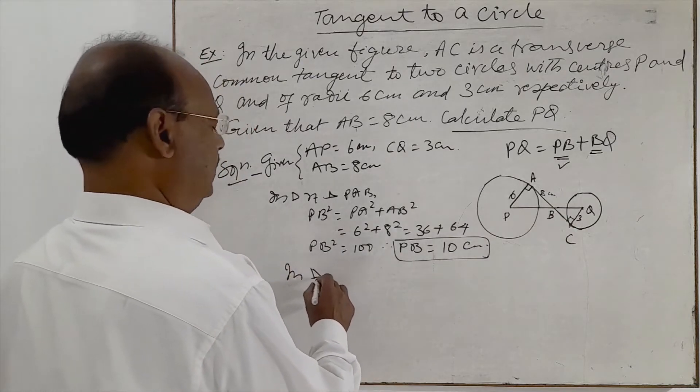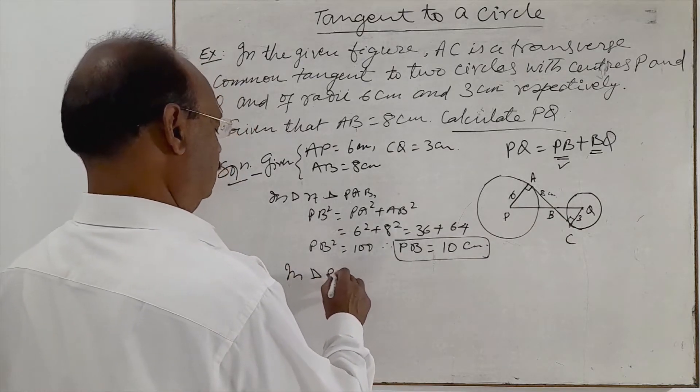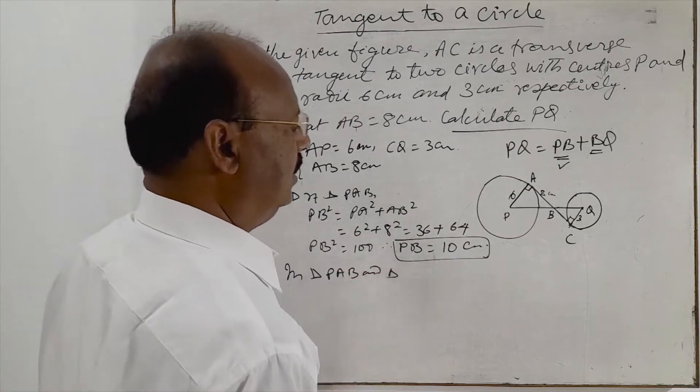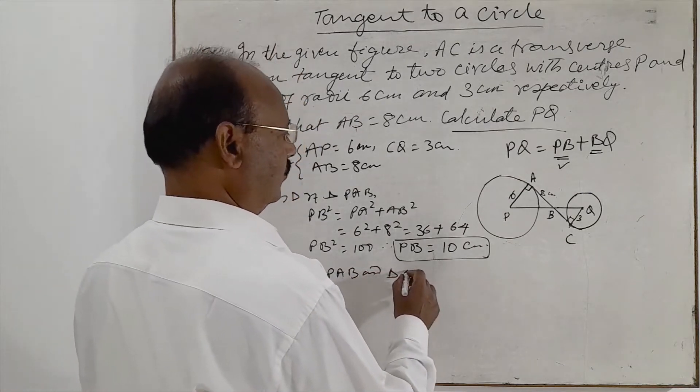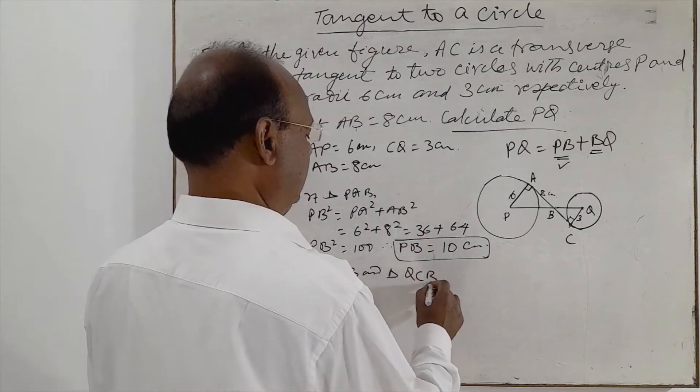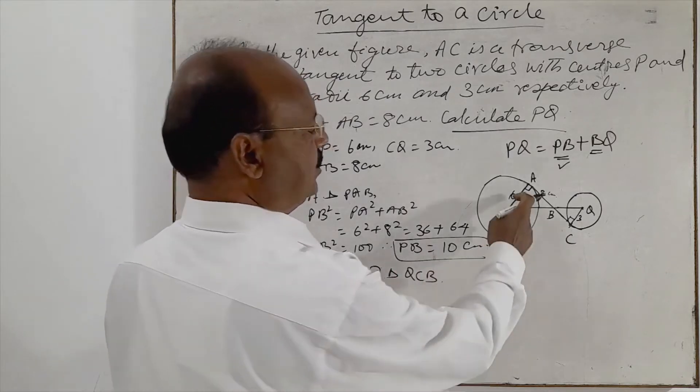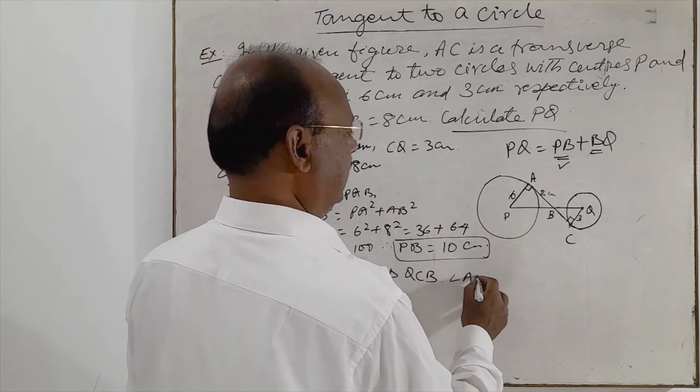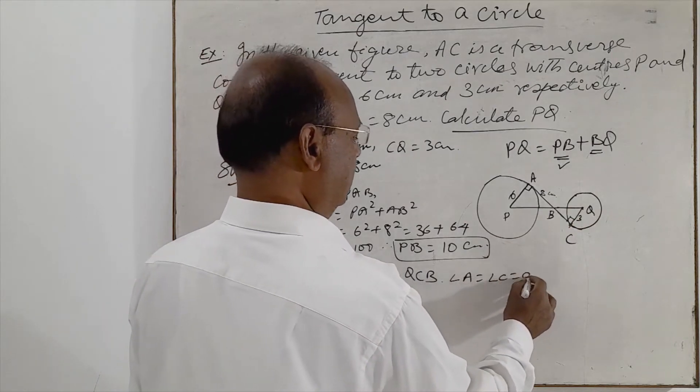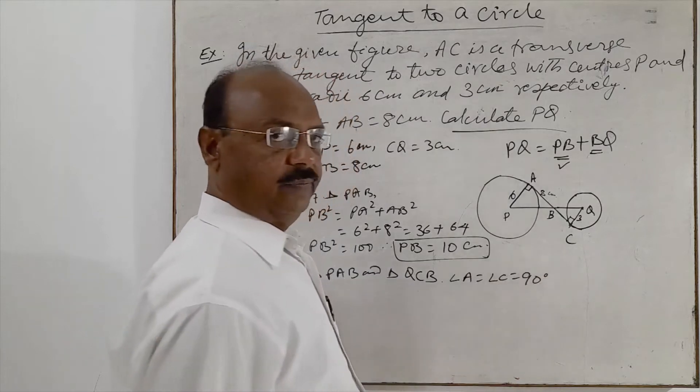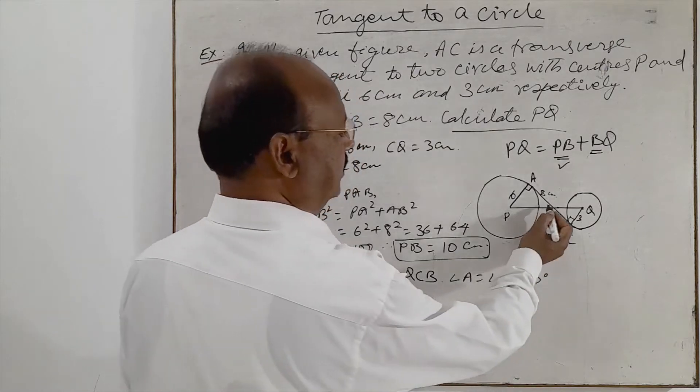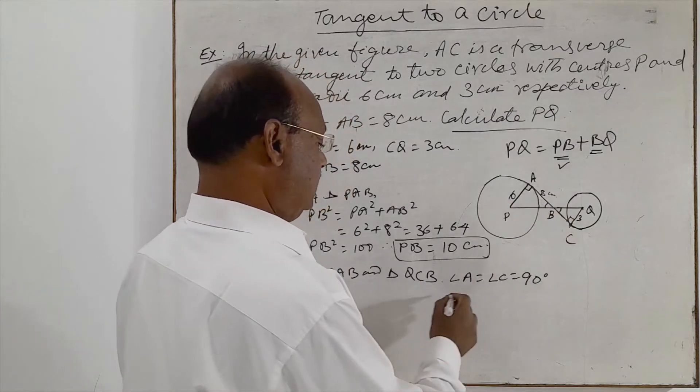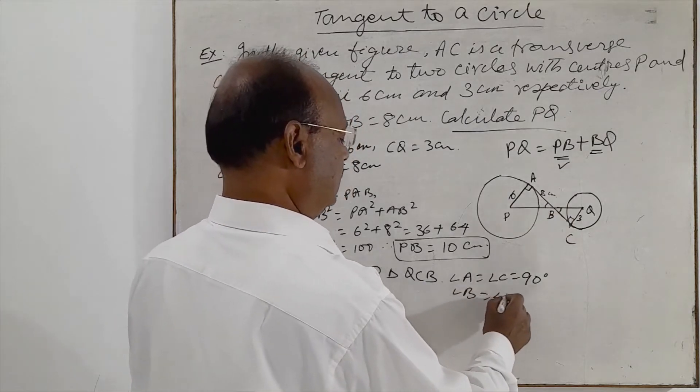In triangle PAB and triangle QCB, these two angles are 90 degrees. Angle A is equal to angle C is equal to 90 degrees. And these two angles are vertically opposite angles. Angle B is equal to angle B.